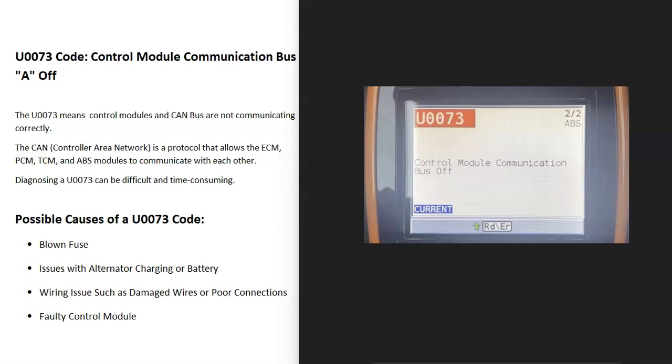Today I'll talk about a U0073 code, what it is and how you go about fixing it. So what is a U0073 code? It's a control module communication bus A off.